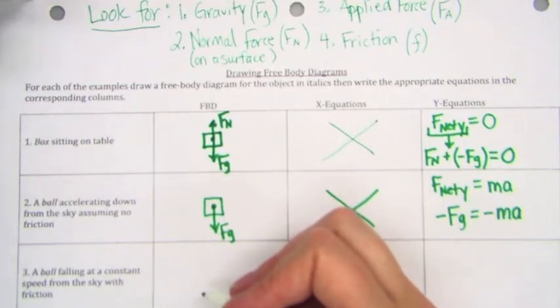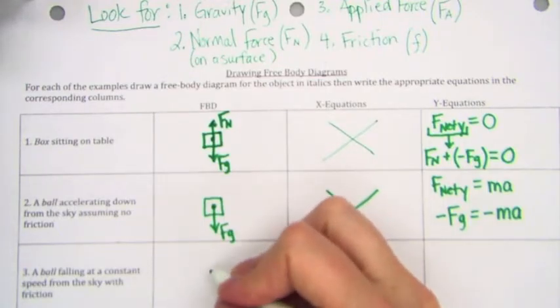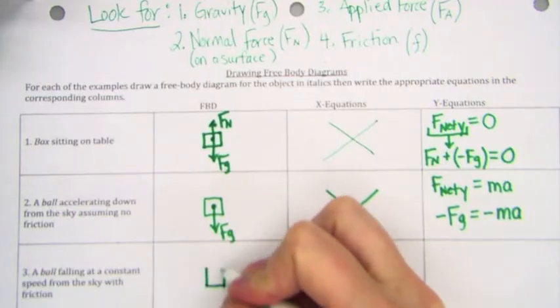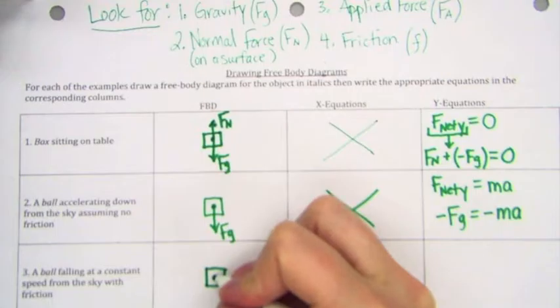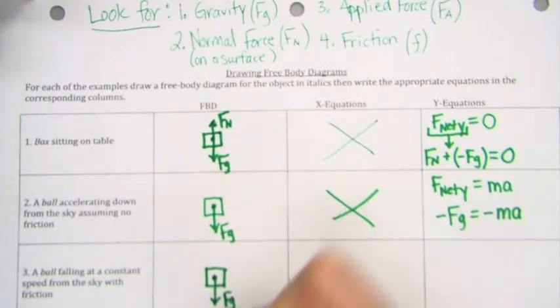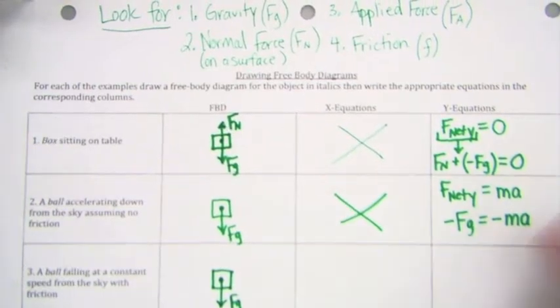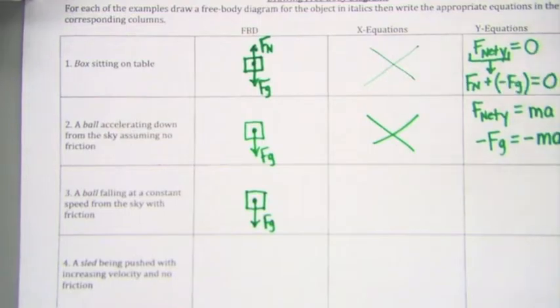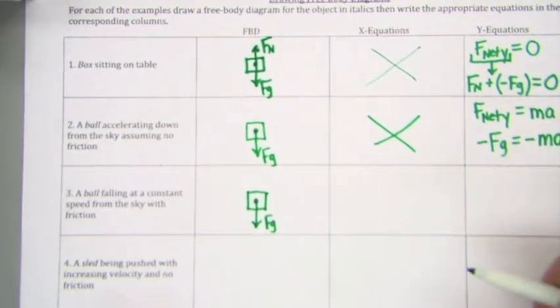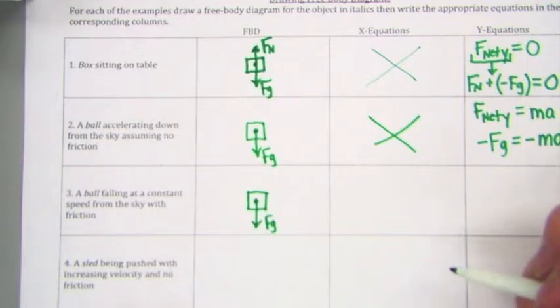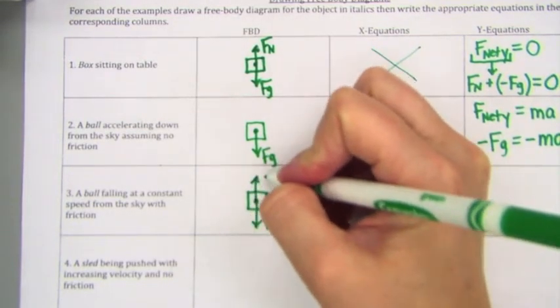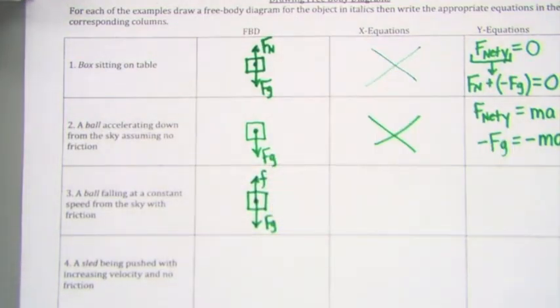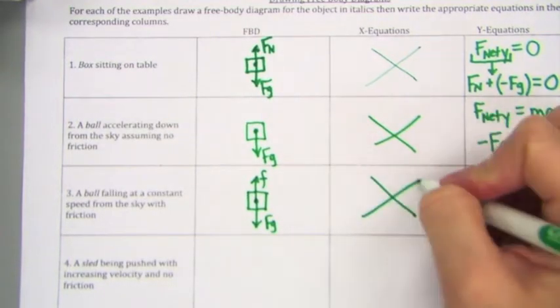Okay. Next step. A ball is falling at a constant speed from the sky with friction. So I draw my box. FG always goes down. In this case, we have friction. Friction goes the opposite direction of motion. So that means friction is going to go up. The object is falling. Opposite of down is up.